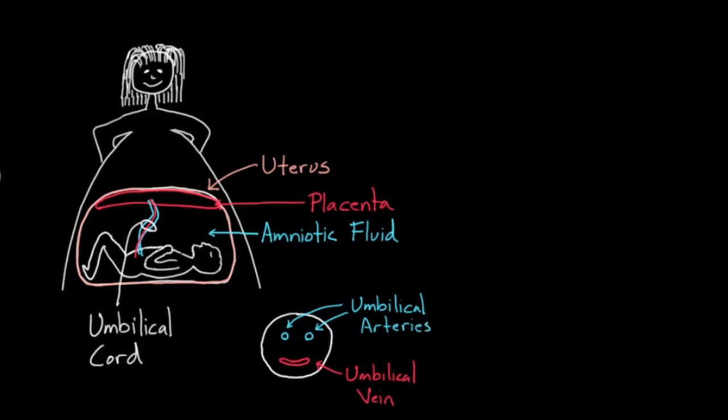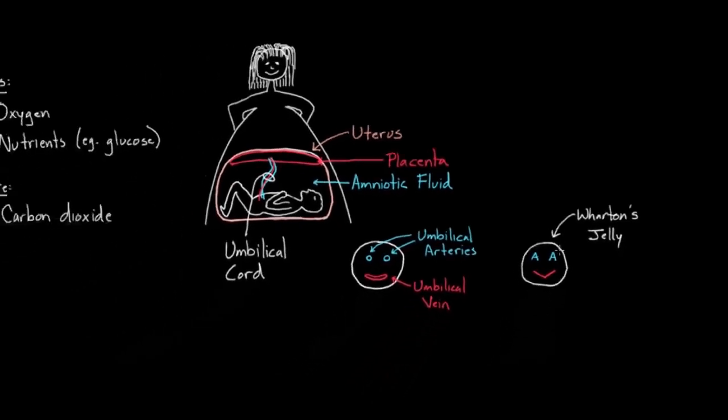So the umbilical arteries and the umbilical vein look like this. And actually they're not just freely floating out there. They're actually encased in this jelly called Wharton's jelly. I'm actually just going to redraw this to show you how I remember this. Because sometimes it's hard to remember if there's one artery or two arteries. I kind of think of the mouth as a vein or a V, and I think of the eyes as two little As. So that's my little trick for remembering that there are two umbilical arteries and one umbilical vein, and that they're all encased in the Wharton's jelly. And this is the umbilical cord.